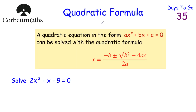We've looked at how to solve quadratic equations by using factorization, but what if the quadratic doesn't factorize? Well, one approach we could use is the quadratic formula. So if you've got a quadratic equation in the form ax squared plus bx plus c equals zero, you can solve it using the quadratic formula, which is x equals negative b plus or minus the square root of b squared minus 4ac all over 2a.